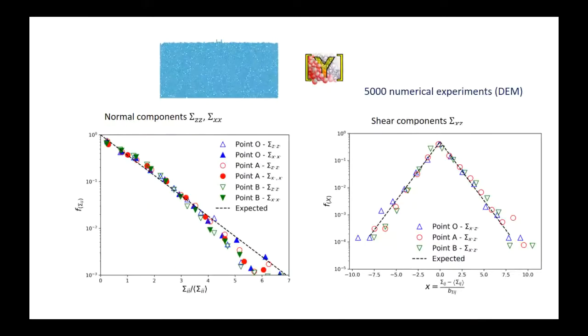This theory has been validated by solving more than 5000 times the same numerical experiment with the discrete element method. Then the stress was recorded at three different control points, and the PDFs of normal and shear components were compared to those predicted by the theory.